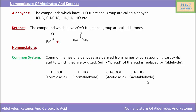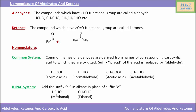Now we will see the nomenclature of aldehydes by the IUPAC system. Here, add the suffix 'al' to the corresponding alkane in place of the suffix 'e'. For example, HCHO i.e. formaldehyde is named in the IUPAC system as methanal, and CH3CHO i.e. acetaldehyde is named in the IUPAC system as ethanal.